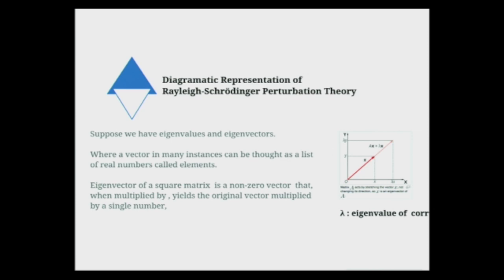This is a diagrammatic representation of the Rayleigh-Schrödinger perturbation theorem. There's a concept of eigenvalues. There's a very complex definition of how you can use eigenvalues in transformation using a matrix, but I like to think of them as integers — a form of values that have a specific quantized value. They can't be in between. That's how I perceive it.